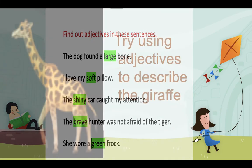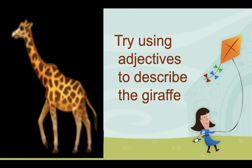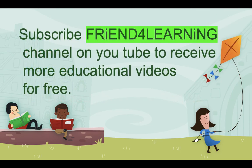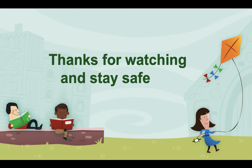Here is a picture of a giraffe. I want you to use your own imaginative, descriptive words to explain this giraffe. Always remember: first ask yourself questions — 'what?', 'how many?', 'which one?', 'what kind?' — and you will end up with adjectives. I hope you understood this lesson well. Subscribe to Friendful Learning Channel on YouTube to receive more educational videos for free. Thanks for watching, stay safe, and have a good day. Bye!